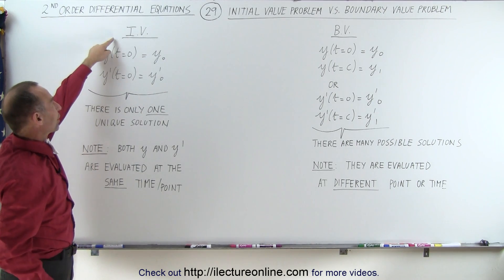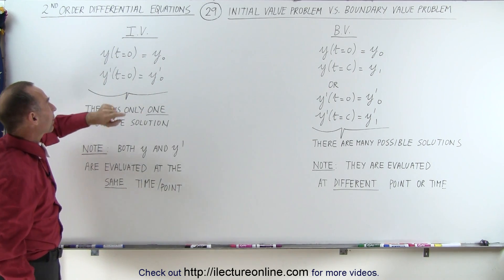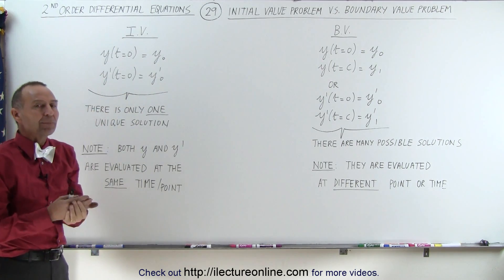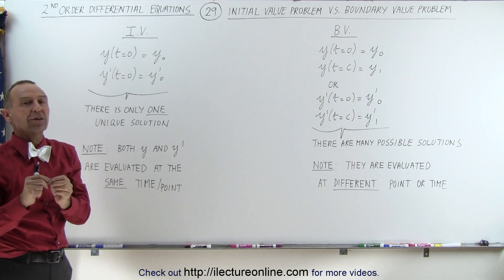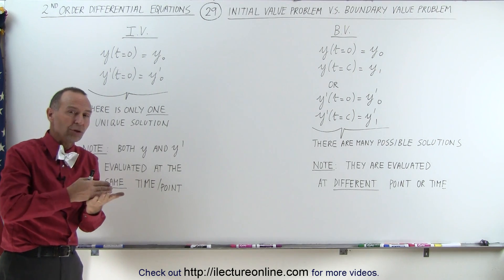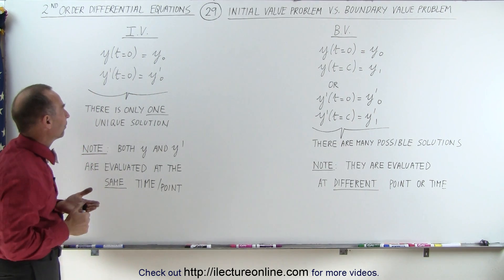An initial value problem, IVP as we sometimes call it, is a problem that has been given some initial values to find the constants, the very specific constants which turn the general solution into a very specific solution.